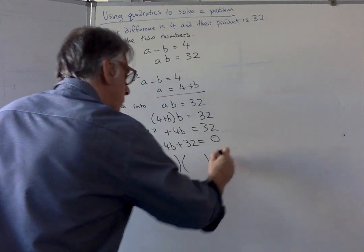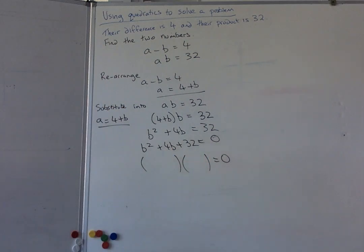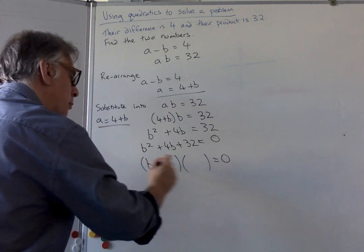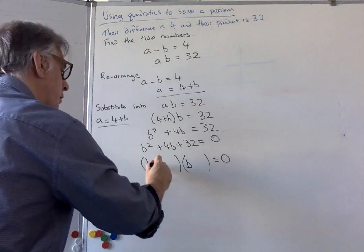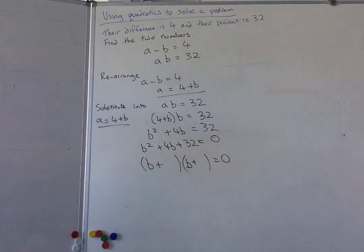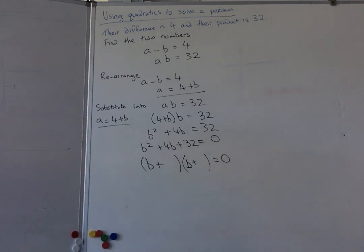So factor that without me, stop the video, factor it and see if you can get a result for B. So what you should have done: B squared, so it's going to be a B and a B. Plus and plus, so I know it's going to be a plus and a plus. Then I look at the factors of 32 and I need to put the right numbers in place.